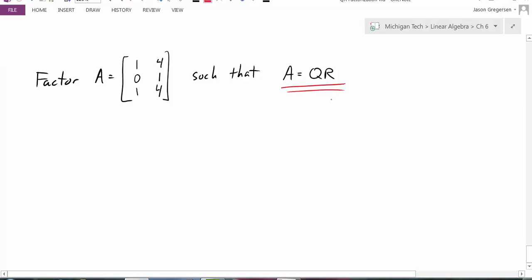So the first thing is to look at our columns of A. These are not multiples of each other, so they are linearly independent. And we're going to treat them as a basis for our column space. But now we want to use Gram-Schmidt to find an orthonormal basis for this column space.